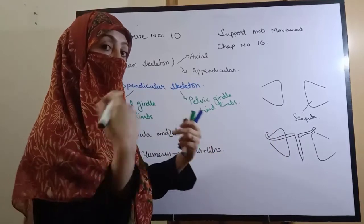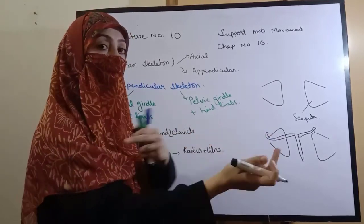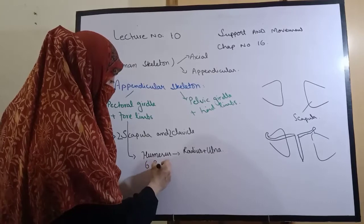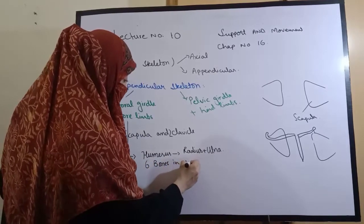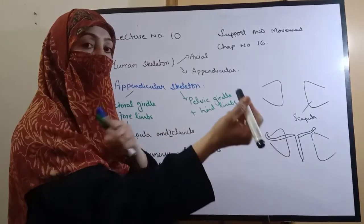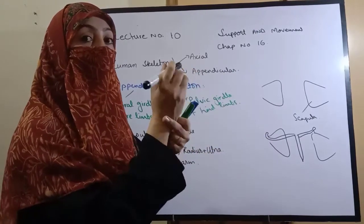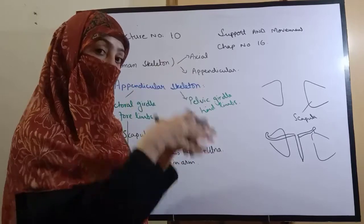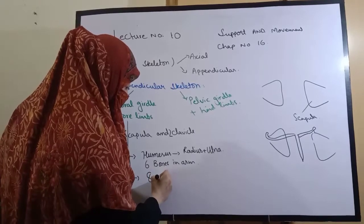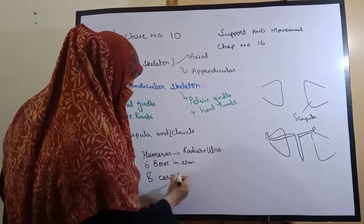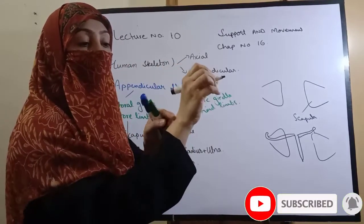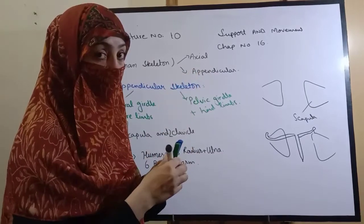If we talk about two arms, we have one humerus, one radius, and one ulna per arm - that's six bones total. Then we have carpals, the small bones in the wrist. There are eight carpals.